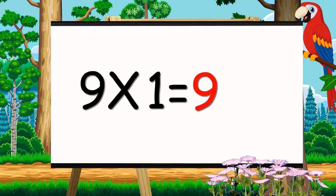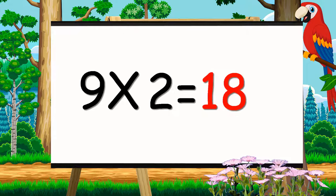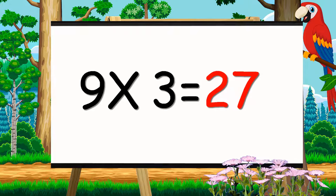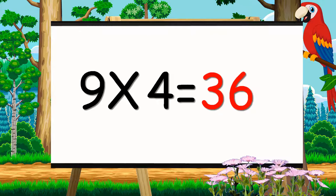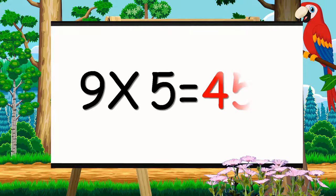Nine ones are nine. Nine twos are eighteen. Nine threes are twenty-seven. Nine fours are thirty-six. Nine fives are forty-five.